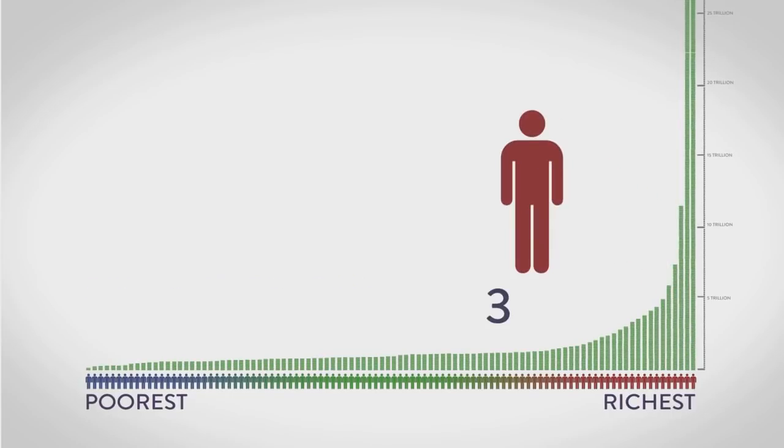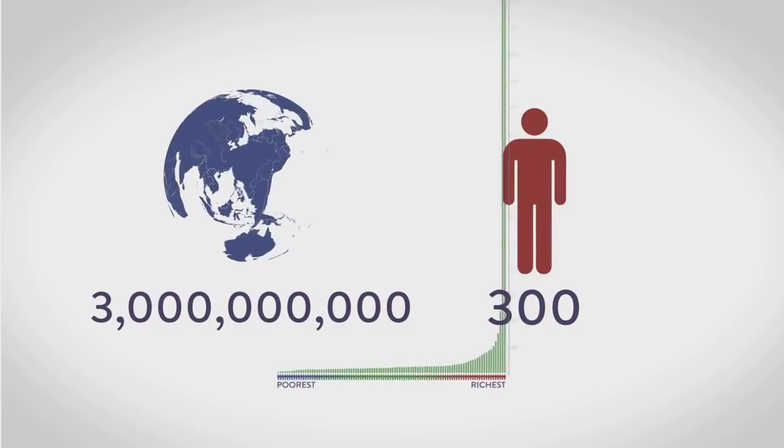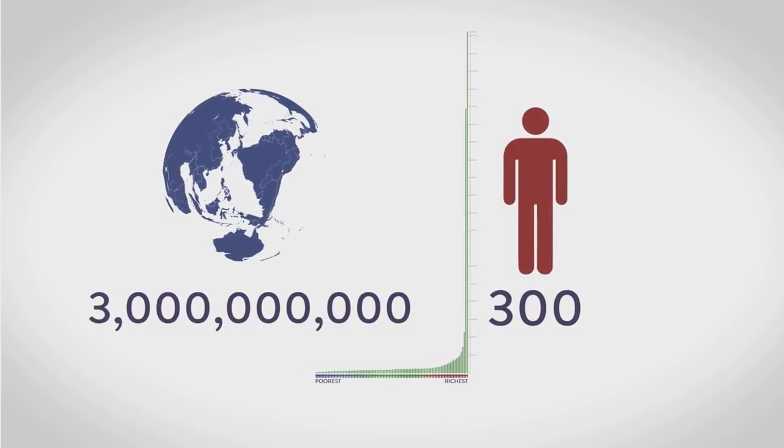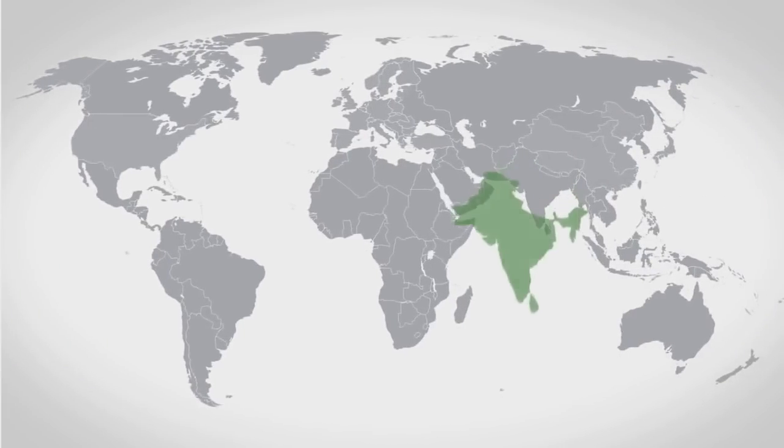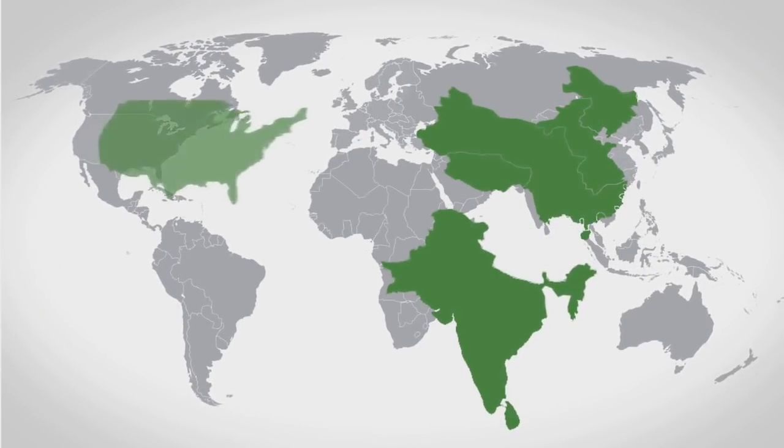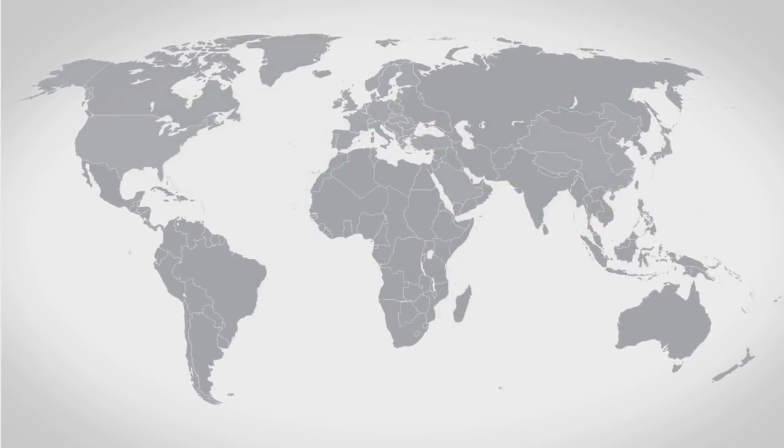The richest 300 people on Earth have the same wealth as the poorest 3 billion. So the number of people it takes to fill a mid-sized commercial aircraft have more wealth than the populations of India, China, the US, and Brazil combined. We can also see this difference geographically,